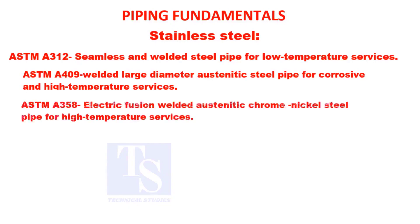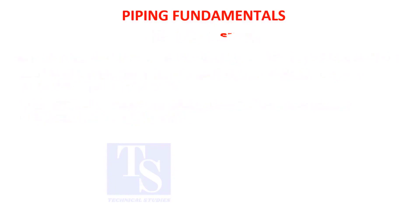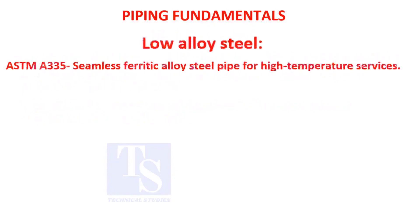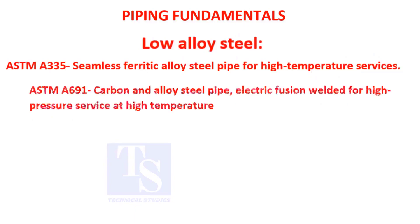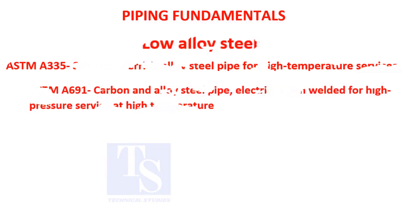ASTM A-691: carbon and alloy steel pipes. ASTM A-358: electric fusion welded, austenitic chrome nickel steel pipe for high temperature services. ASTM A-106: stainless steel pipe for low temperature services. ASTM A-691: carbon and alloy steel pipe, electric fusion welded for high pressure service at high temperature.